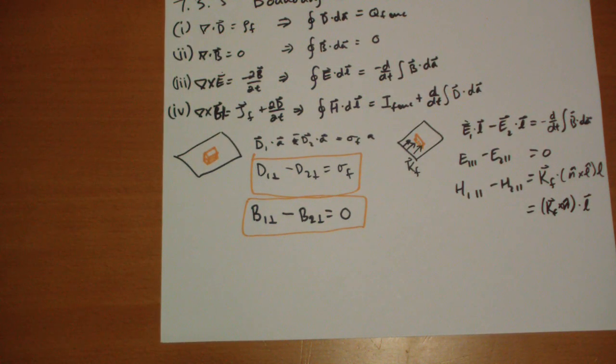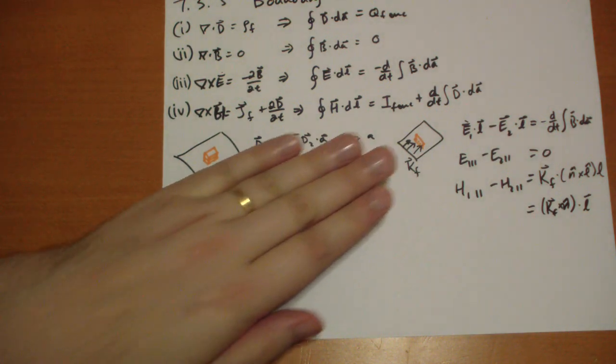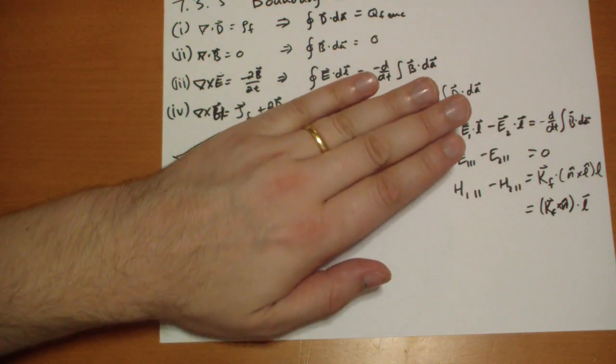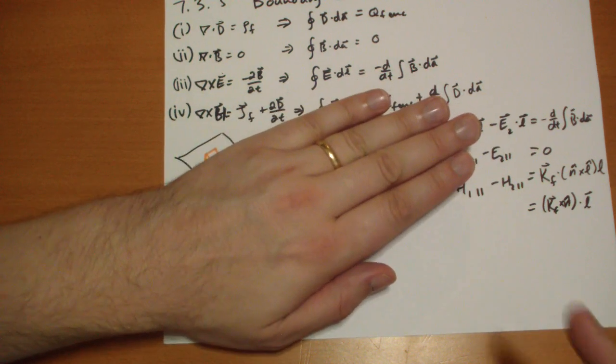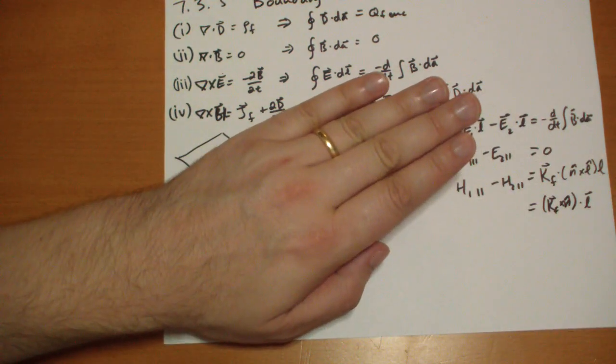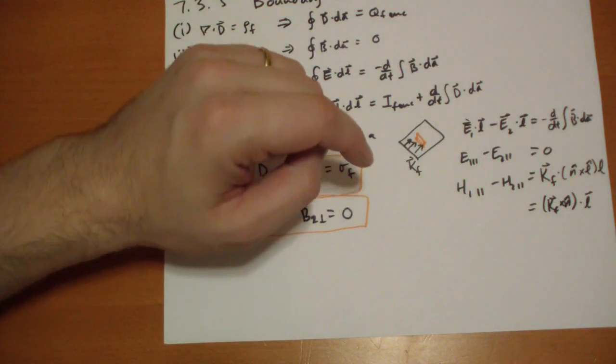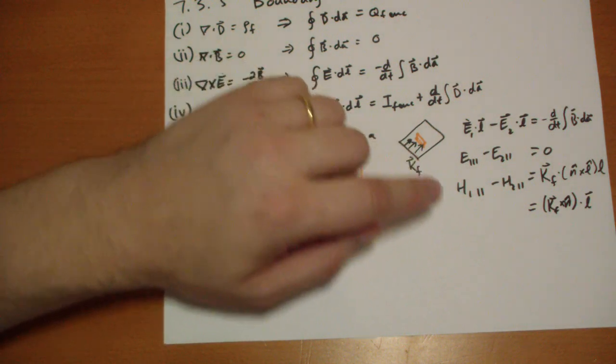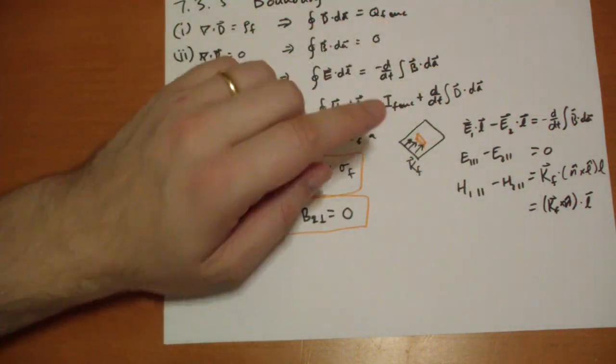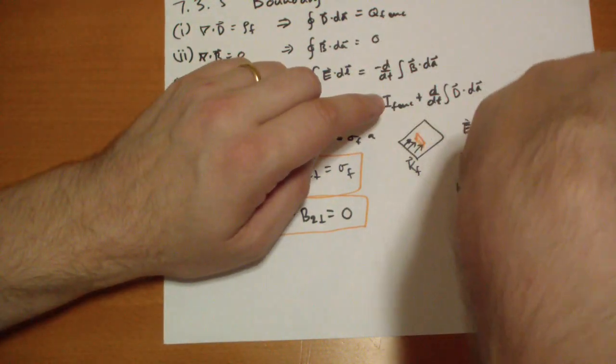If you have a surface current passing this way, the H vector is going to be perpendicular to that and it's going to jump based on how strong that current is. It's pointing this way, then you jump down and now it's pointing that way. There's a discontinuity there.